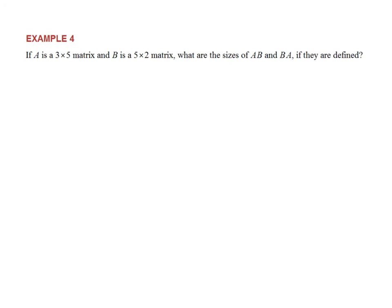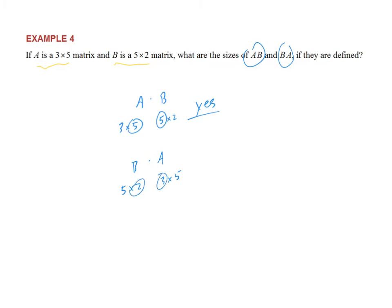If A is a 3 by 5 matrix and B is a 5 by 2 matrix: for A times B, columns of A (5) match rows of B (5), so yes, it's defined. For B times A, that's 5 by 2 times 3 by 5 — columns of B (2) don't match rows of A (3), so that product is not defined. This illustrates that matrix multiplication is not commutative — in one order it's defined, in the other it isn't even.